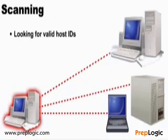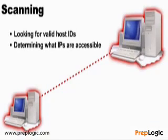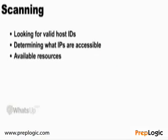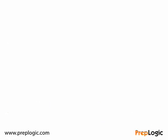Moving into scanning, after identifying the network and collecting information through DNS zones — finding IP addresses — we're going to scan those public IP addresses to see if we find any valid, live hosts. It may be a router, a specific operating system, or multiple IP addresses bound to a single system. There are tons of available tools for this phase, from everyday administration toolkits like What's Up Gold and WS_Ping, to Nmap and Warping.